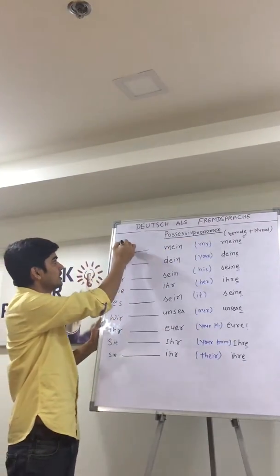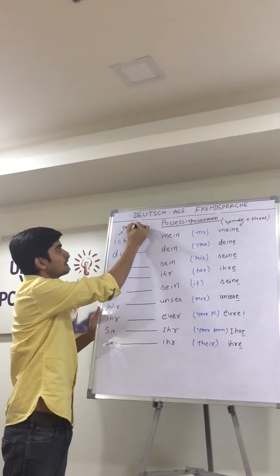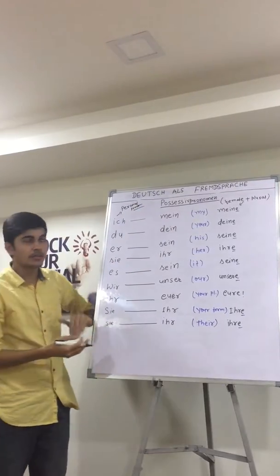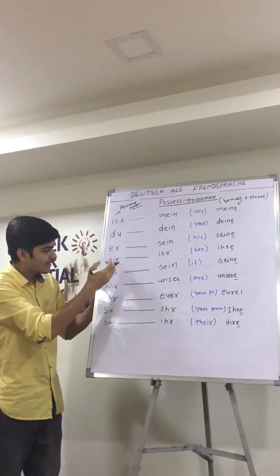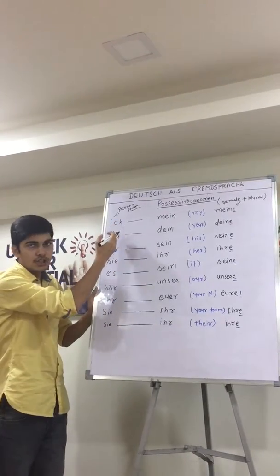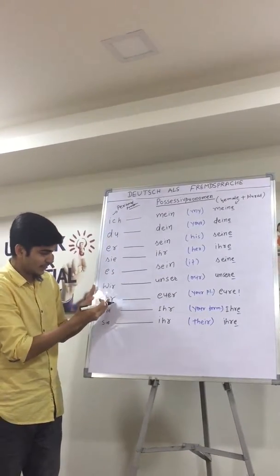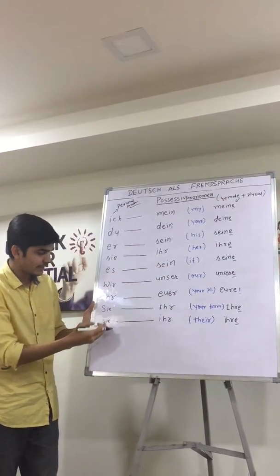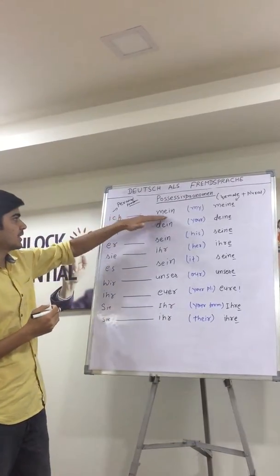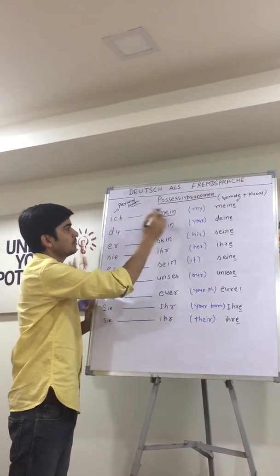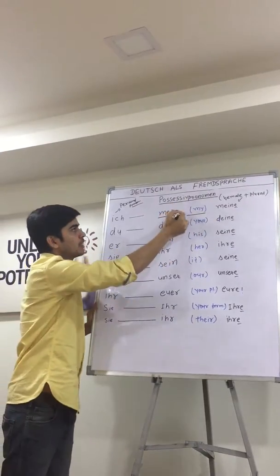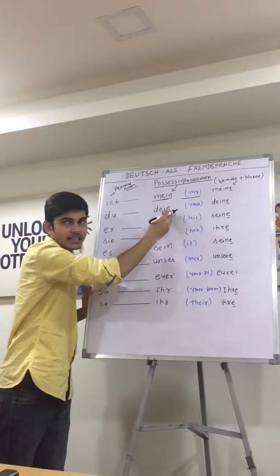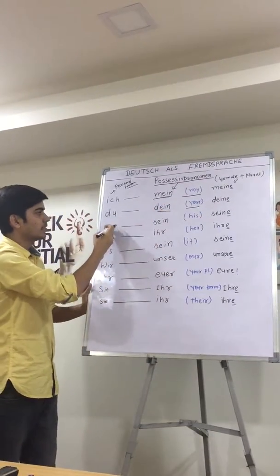So this is the personal pronoun. These are the personal pronouns: ich, du, er, sie, es, wir, ihr, Sie (formal), sie (they). So 'ich' becomes 'mein' — that is 'mine' in the possessive pronoun. 'Du' becomes 'dein' — that is 'your'.